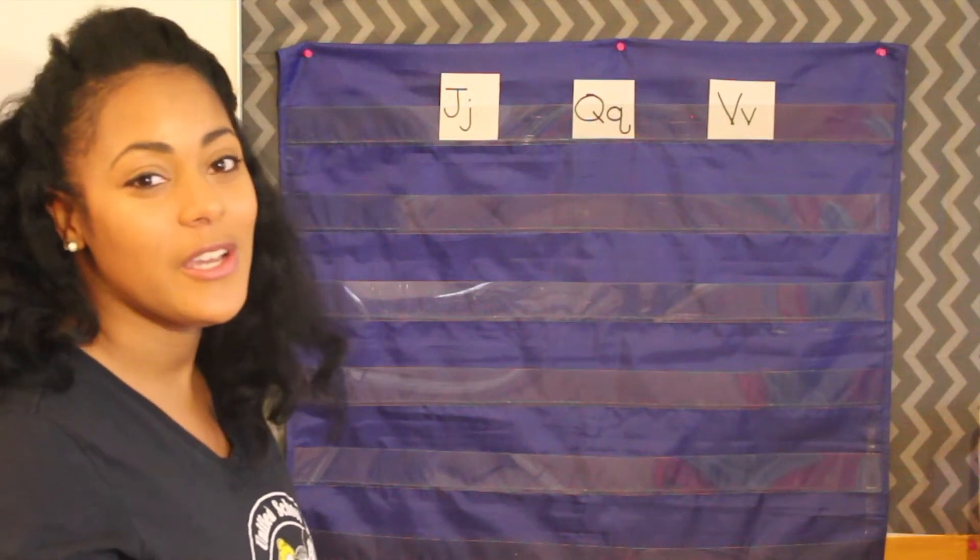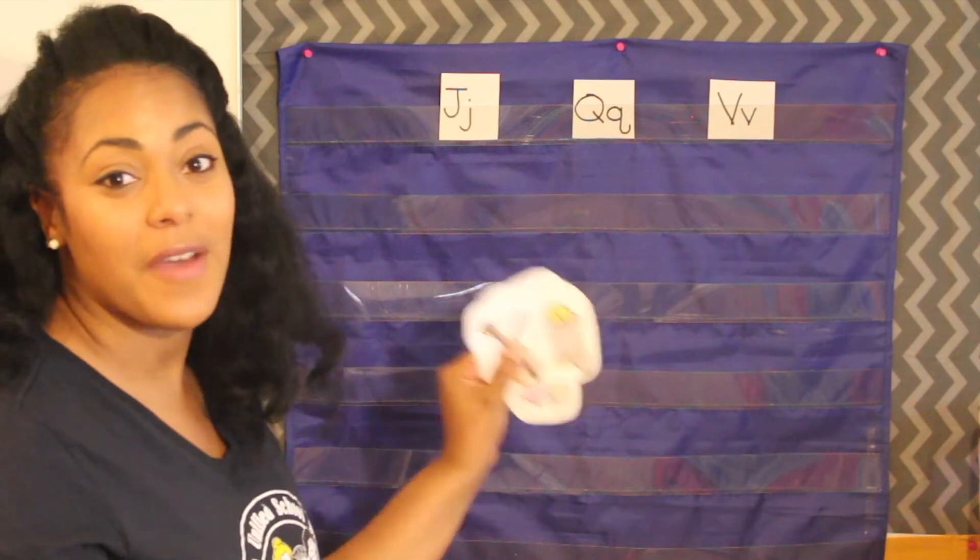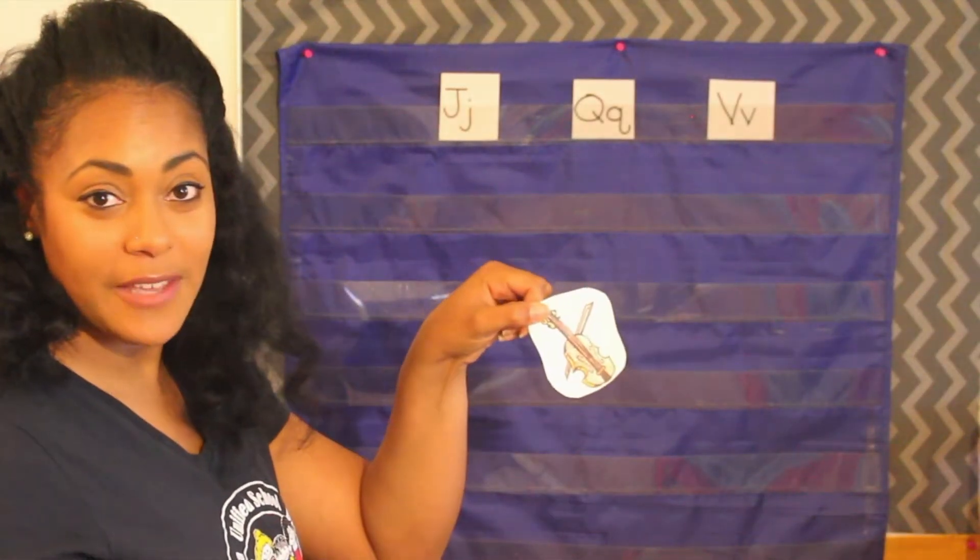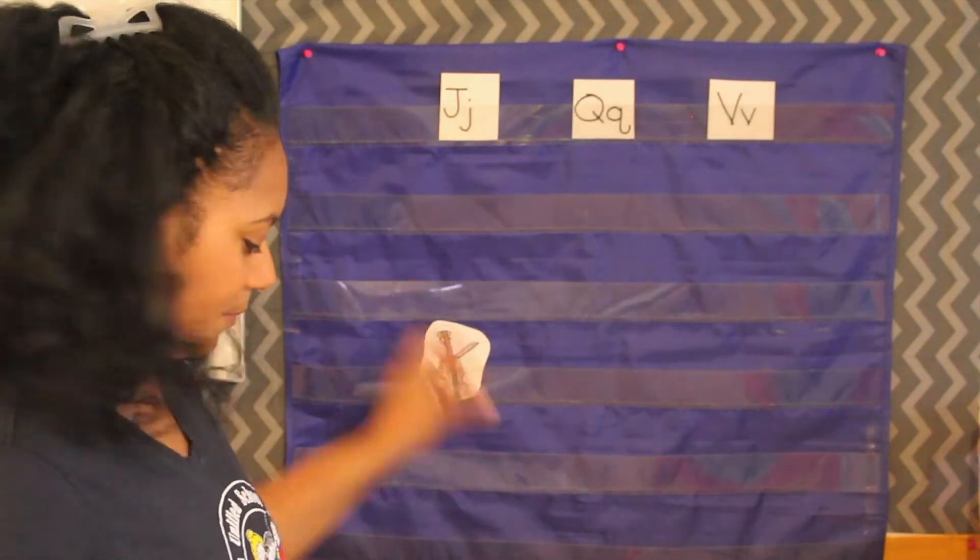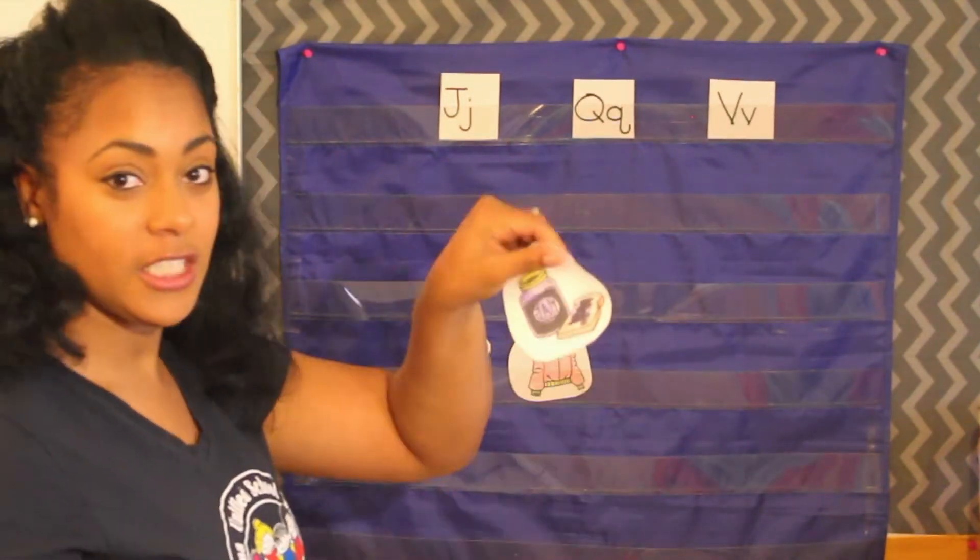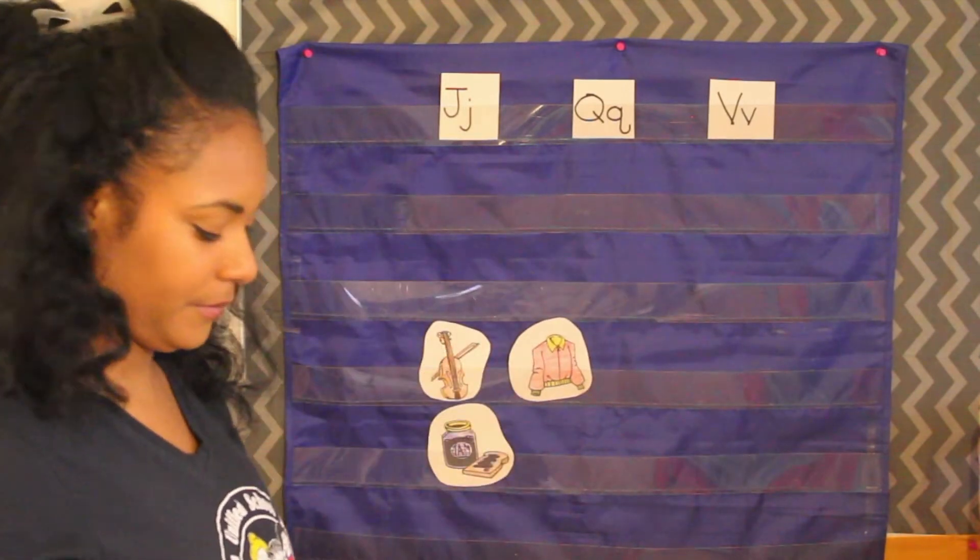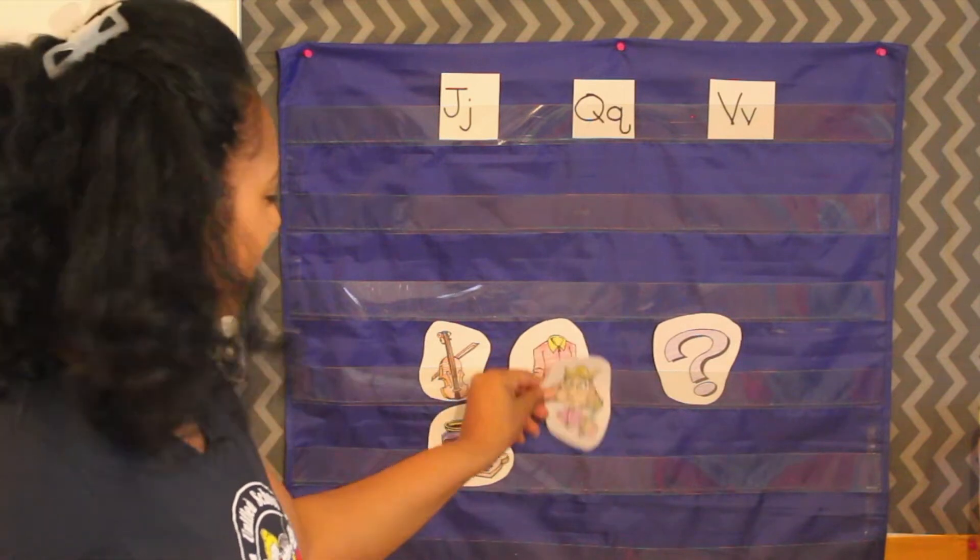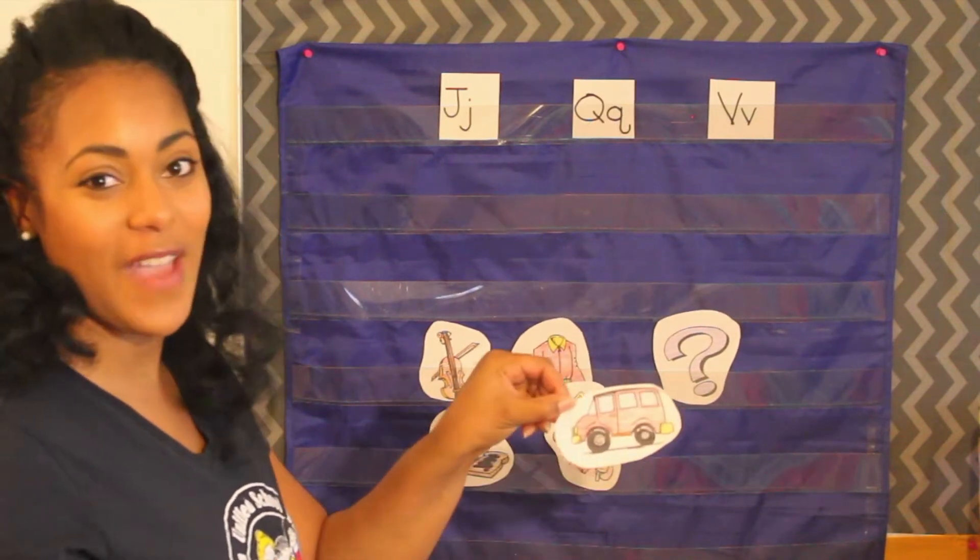So first I'm going to need your help sorting out these pictures I have by the beginning sounds that they make. So my first picture is a violin, jacket, jam, question mark, queen, van.